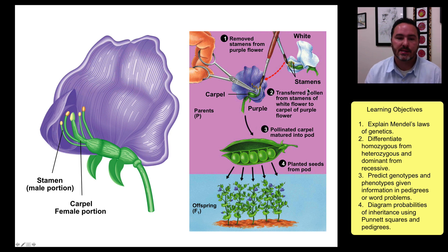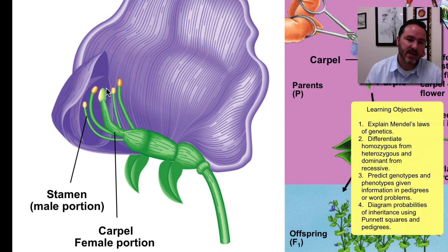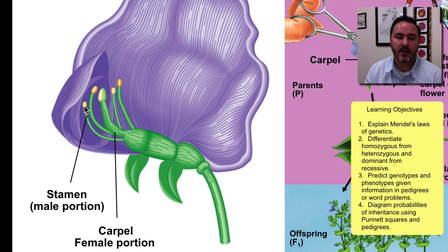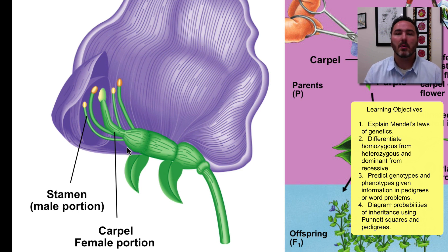Pea plants are really interesting because they have the ability to self-fertilize. Looking at the anatomy of a pea plant flower, you have the female portion which is called the carpel and the male portion which is called the stamen. The female portion up on the tip is kind of sticky and this is what collects the pollen grains. The pollen is produced by the stamens and out on the anthers — almost like these little balloons — they burst open and the pollen can be distributed by insects, the wind, or whatever. Pea plants can self-fertilize, so this flower head never needs to open up and invite a bee inside to reproduce.